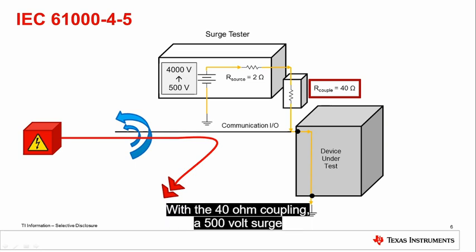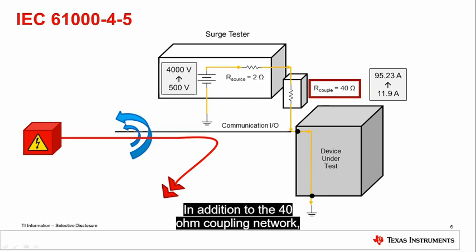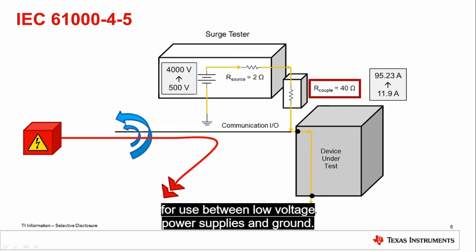With the 40 ohm coupling, a 500 volt surge will now only induce 11.9 amps rather than the original 250 amps. In addition to the 40 ohm coupling network, the standard also defines a 10 ohm network for use between low voltage power supplies and ground.